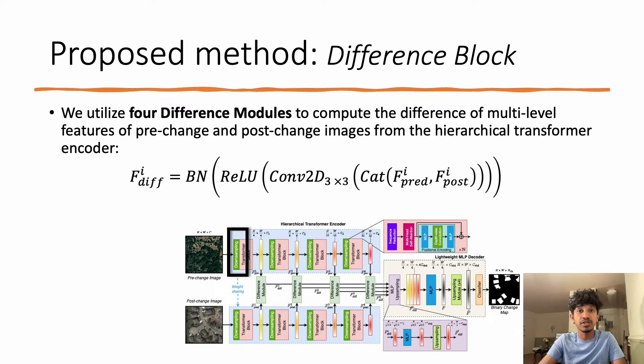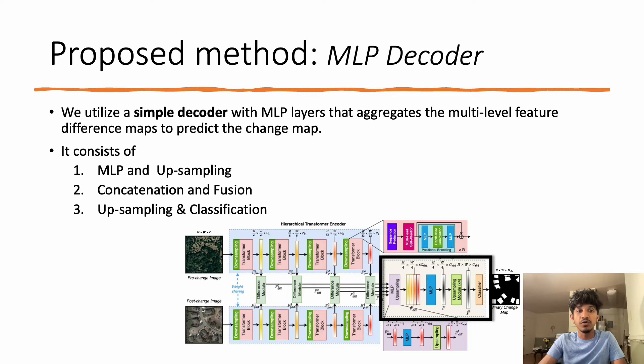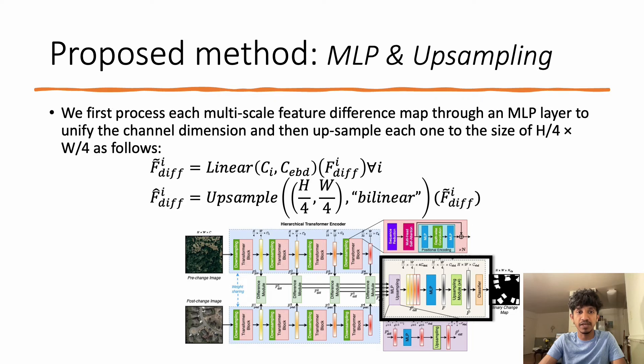We utilize a simple decoder with MLP layers that aggregates the multi-level feature difference maps to predict the change map. The proposed MLP decoder consists of three main modules: MLP and upsampling, concatenation and fusion, and upsampling and classification.